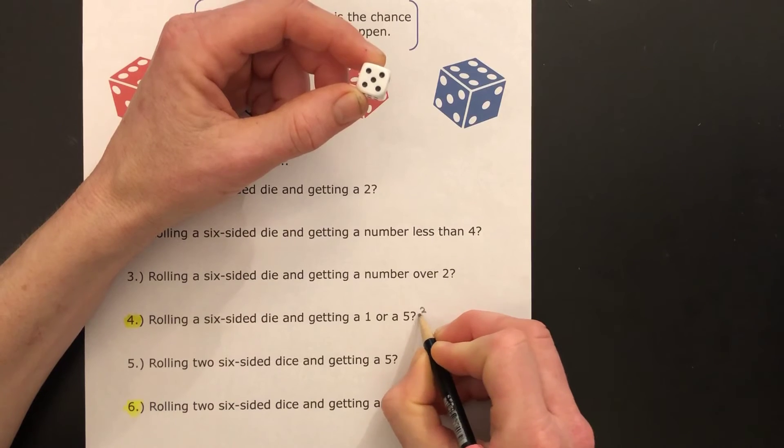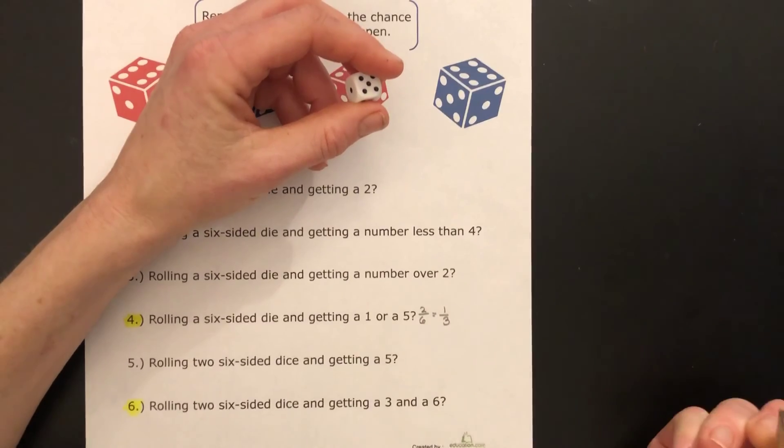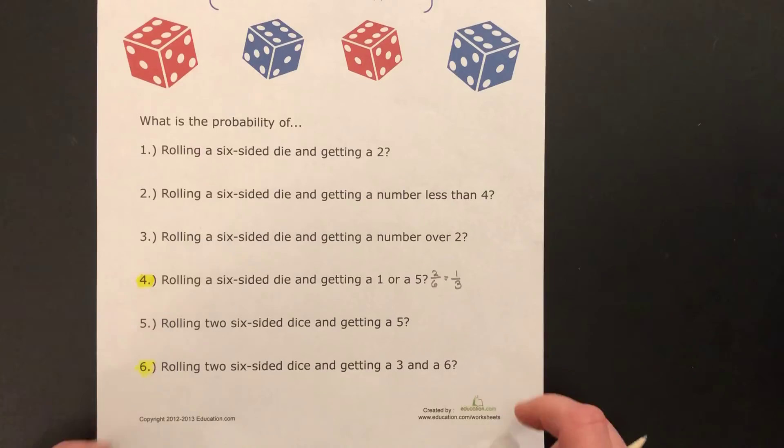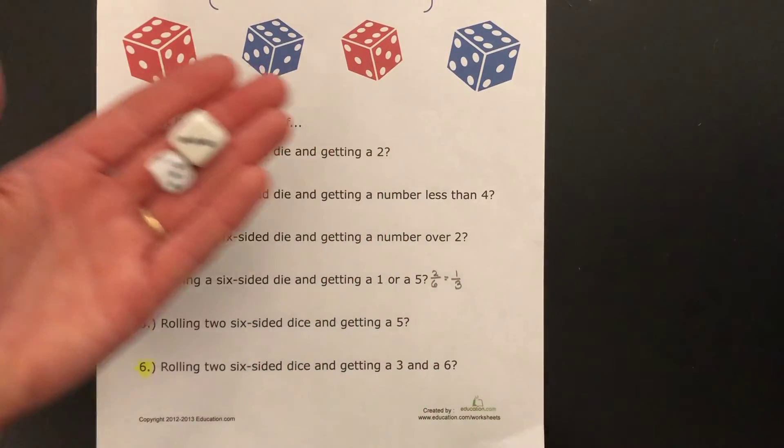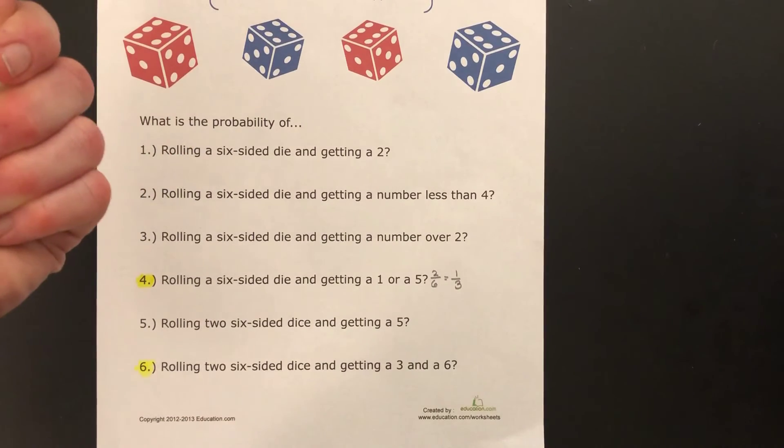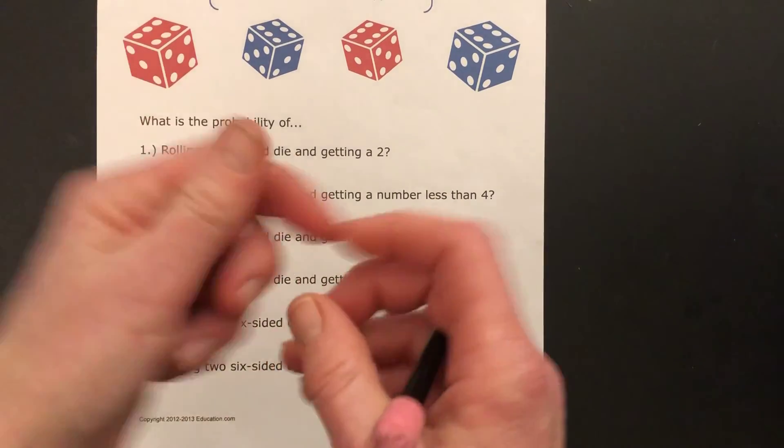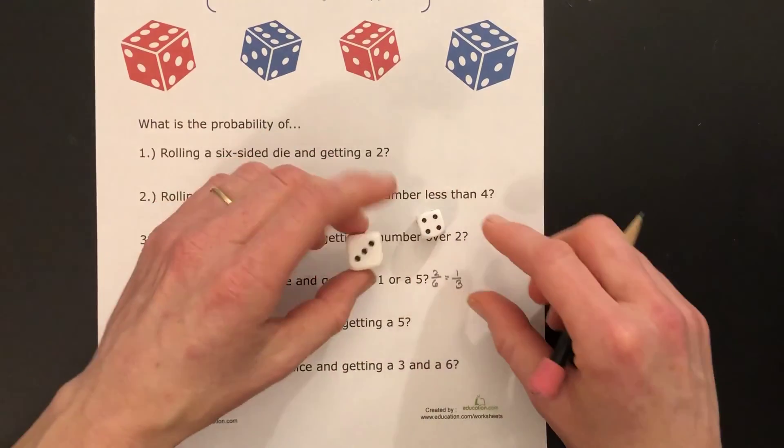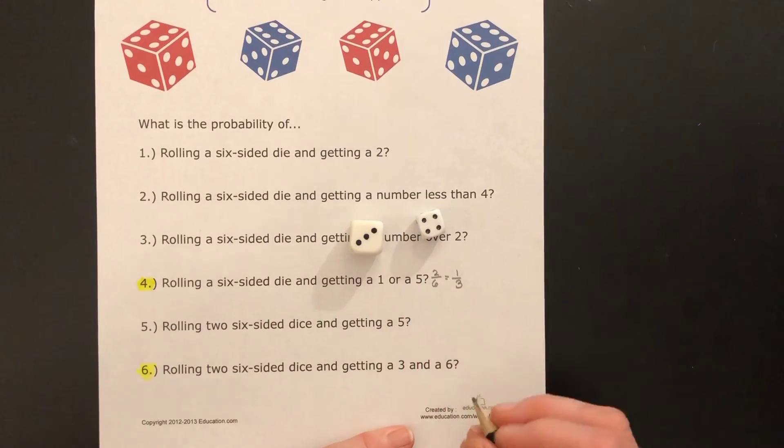Now number six, rolling two six-sided dice, so we're going to have two of them this time. What is the probability of getting a three and a six? Well, each one has a three and a six. There are six sides here, there are six sides here, so that means there are twelve possible outcomes.